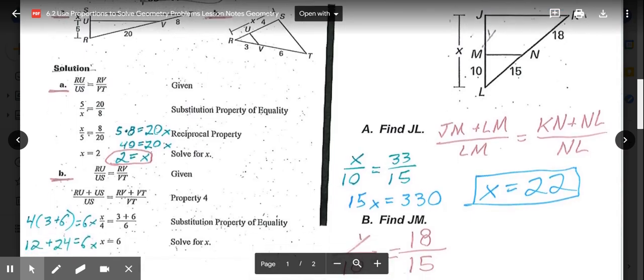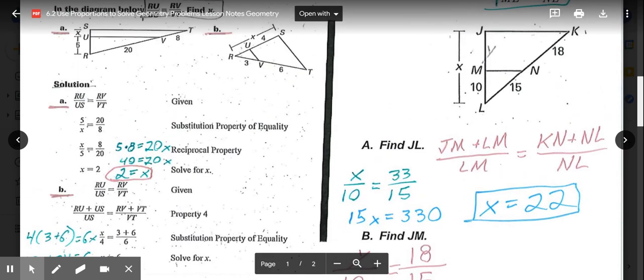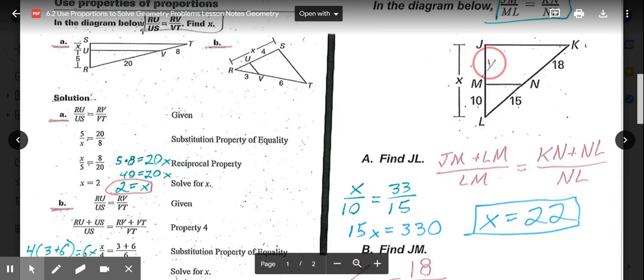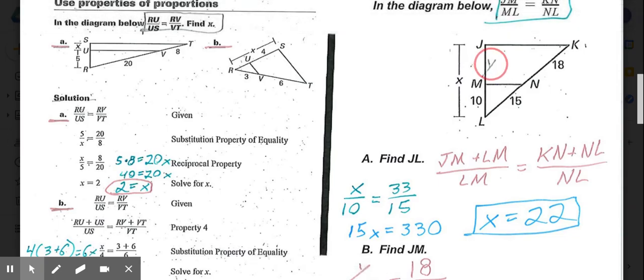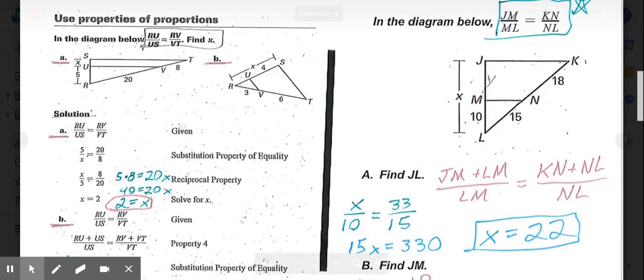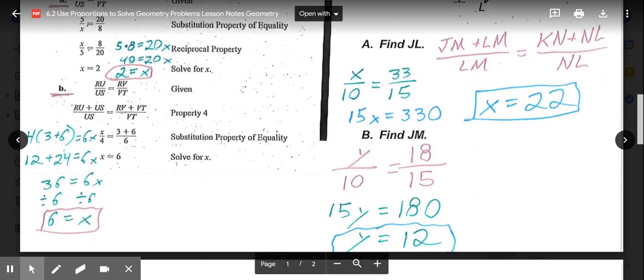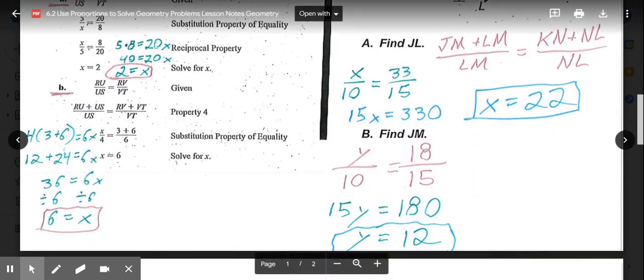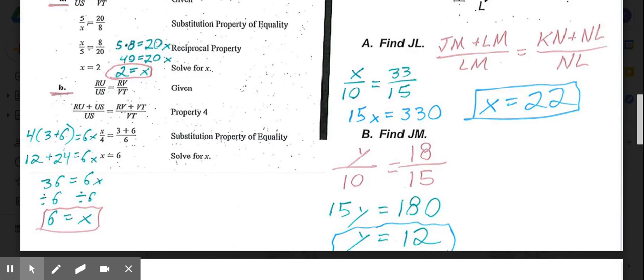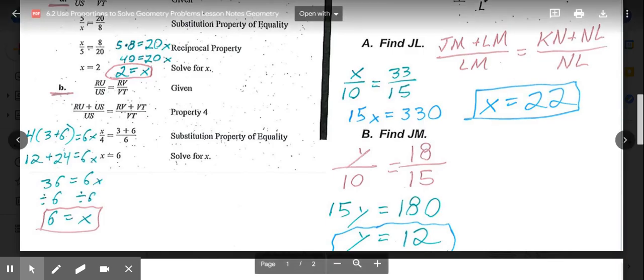In part B, to find JM. In this case, JM here is just the letter Y. So we'd have Y/ML, which is 10, equals KN, which is 18, over NL, which is 15. So Y/10 = 18/15. Cross multiply. So 15Y equals 180. Divide by the 15, and that missing piece, JM, is 12 units long.